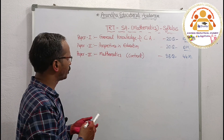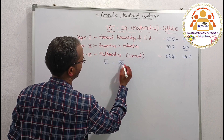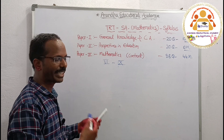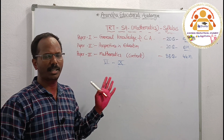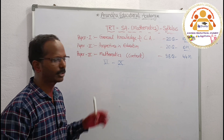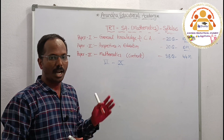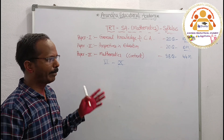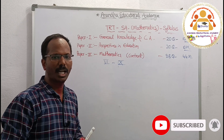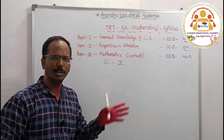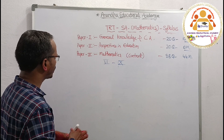In Paper 3, we have to study 6th class to 10th class math textbooks. We have chapters and subtopics: Number Systems, Sets and Relations, Commercial Mathematics, Linear Equations, Geometry, Mensuration, Matrix, Statistics, Computing, Progressions, Trigonometry, and Analytical Geometry. These are the subtopics in mathematics content. Next is Paper 4.